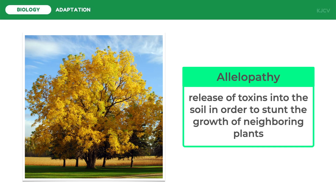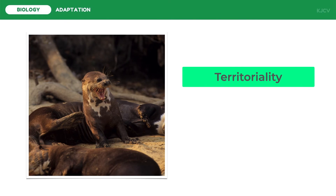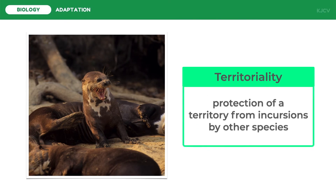Another example of behavioral adaptation for protection is territoriality — the protection of a territory from incursions by other species. Territorial animals like the giant otters are highly protective of their space. They usually live in groups to fight even large predators like crocodiles and jaguars. As a predator attacks one giant otter, the rest of the clan attacks the predator, causing it to be annoyed or threatened.